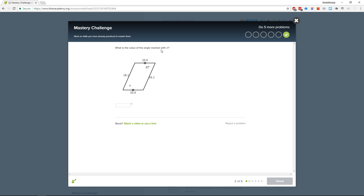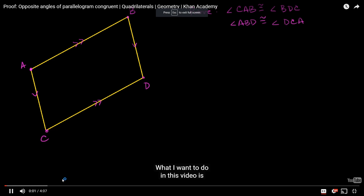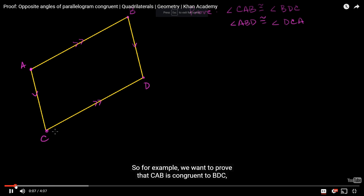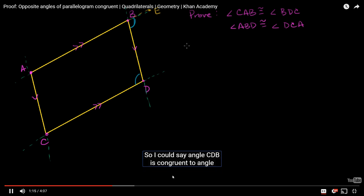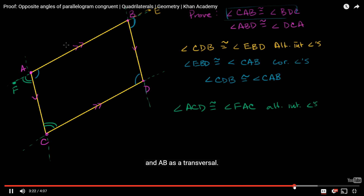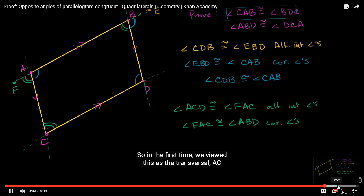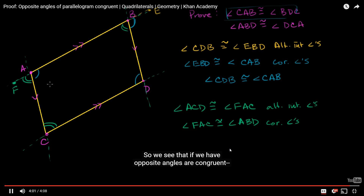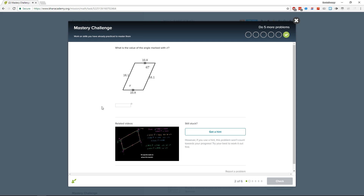Which of the angles marked with x — I think that's 67. I want to prove that angle CAB is positive for it. Since AC and AB is a transversal, they are bonding with ACB, and AB is a transversal. We have opposite angles — if we have a parallelogram, the opposite angles are going to be congruent. And 67.